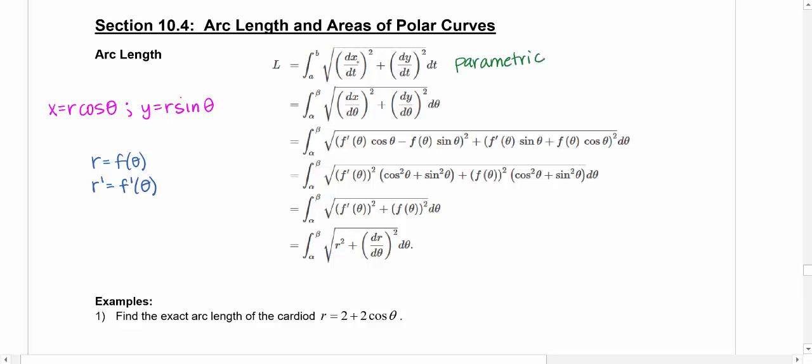That was where we took the derivative of x with respect to t quantity squared plus the derivative of y with respect to t quantity squared. We took the square root of all that integrated with respect to t from a to b and we had the arc length.